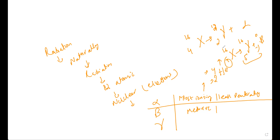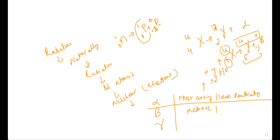So for beta emission, if we have five minus one we get four, and sixteen plus zero we get sixteen. The justification for beta particles being emitted by the nucleus is that when a neutron breaks into a proton and an electron, the proton remains in the nucleus — this is why the charge increases by one — and the beta particle, as an electron, comes out of the nucleus.